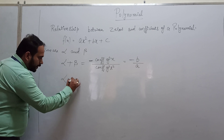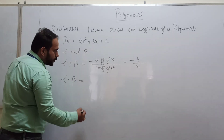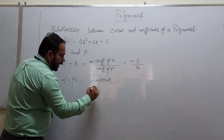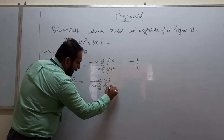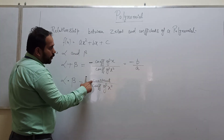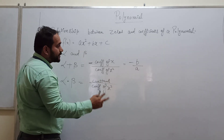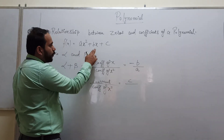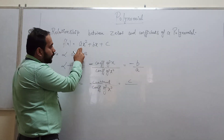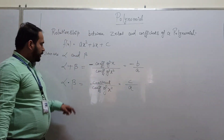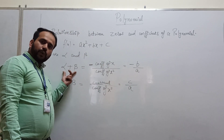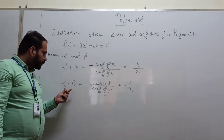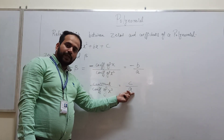The relationship says: sum of the zeros, alpha plus beta, is equal to minus b by a — that is, minus the coefficient of x divided by the coefficient of x squared. And the product of zeros, alpha times beta, is equal to c by a — that is, the constant term divided by the coefficient of x squared.